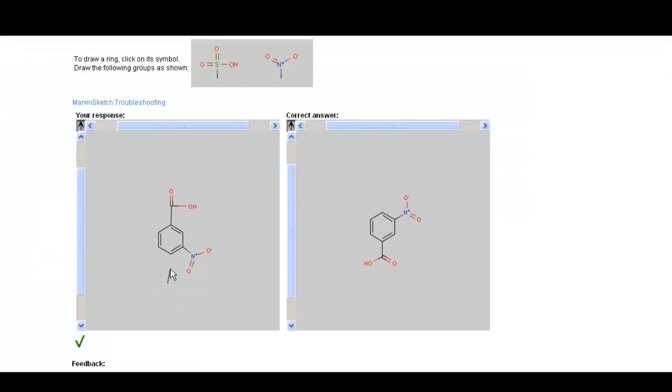We can see my drawing is identical to the correct answer at OWL, just that their molecule and my molecule is rotated. We can see the carboxylic acid group and the nitro group are meta to one another, only one carbon in between them, as shown here.